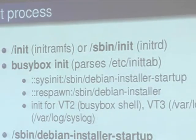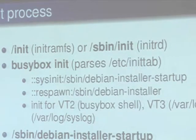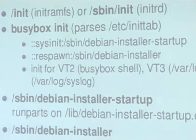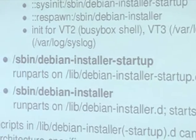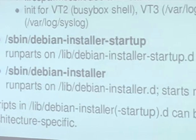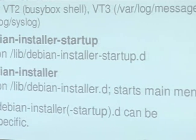The inittab will set up vt2 for a shell, vt3 for syslog messages which we don't use anymore, and vt4 for the syslog, which basically now contains all debugging and log information. One important thing is that most of those scripts come from the rootskel UDEP, and scripts can be architecture specific.